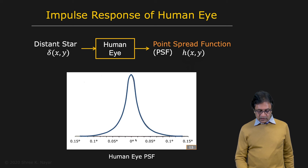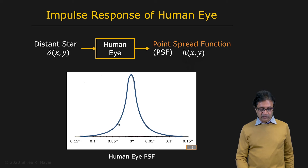This dimension is expressed in degrees, and you see that by the time you get to 0.05 degrees already, the response has fallen off quite a bit. And that's why we end up seeing fairly sharp images. As this gets wider, the images you end up seeing will be blurrier and blurrier.